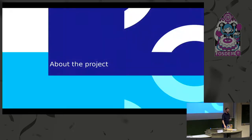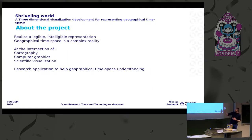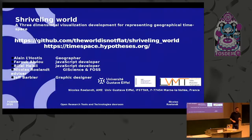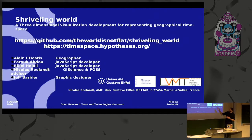This project aims to represent a complex reality for research applications — there is no direct practical use, but it tackles things from cartography, computer graphics, and scientific visualization. It's free, open source software, mostly in JavaScript. You can find the code on GitHub and the research blog at timespace.hypotheses.org. We have a small team, so feel free to join. If you have any questions, I'm here.